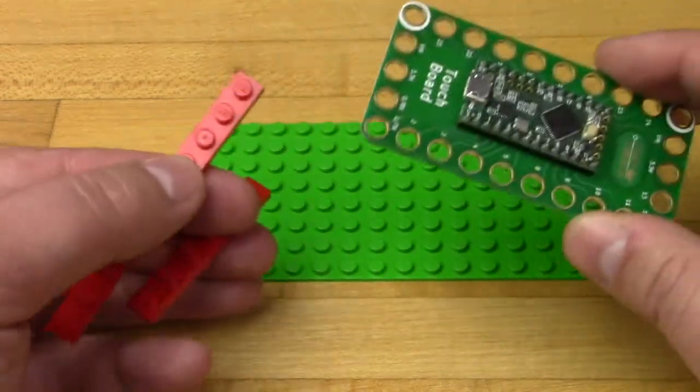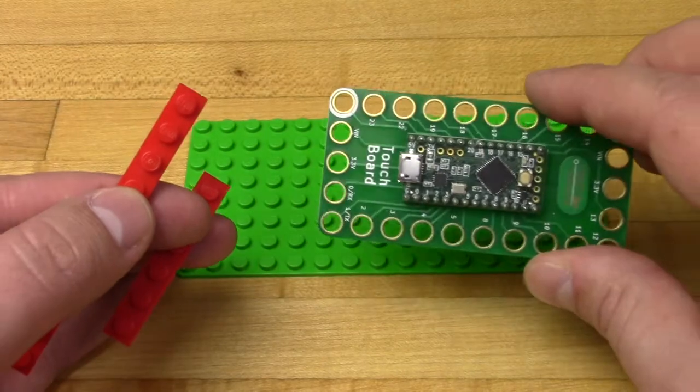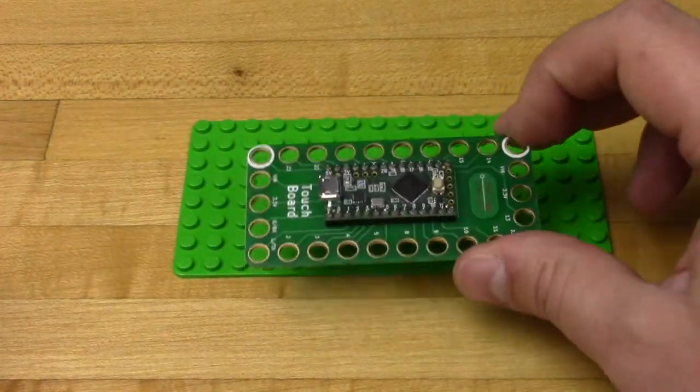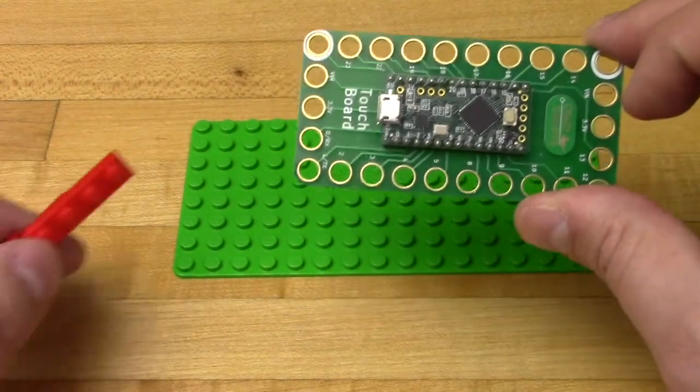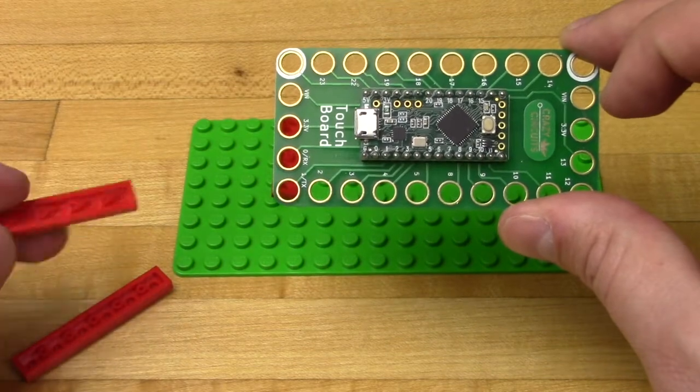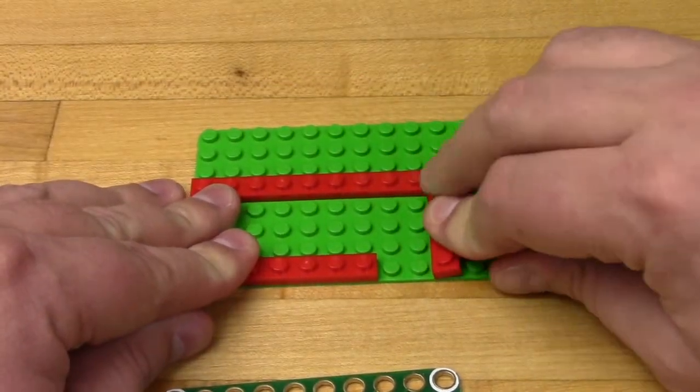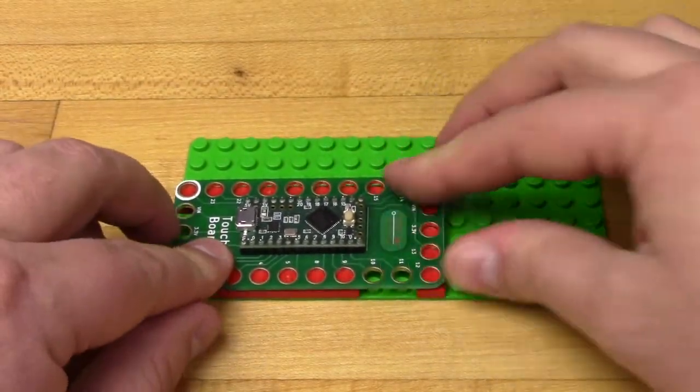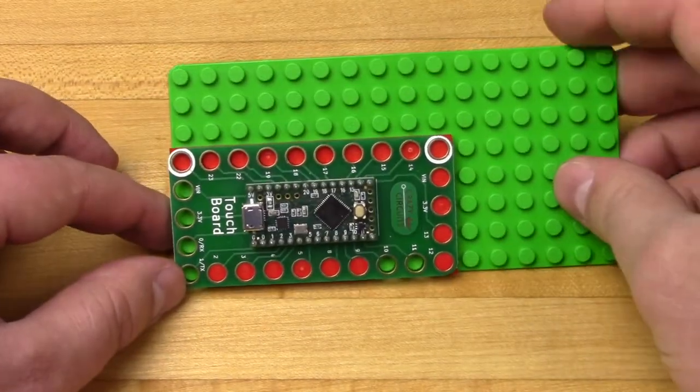As the brains of this project, we'll be using a crazy circuits touch board. Now it is Lego or brick compatible, however the Lego holes don't go all the way through the board. So we'll be using some red 1x6 and 1x8 Lego pieces to make a bit of a platform for it. You can do this exact same activity using your regular Arduino or any Arduino compatible circuit board, but we like using our crazy circuits parts because we like doing our things on a nice Lego grid.